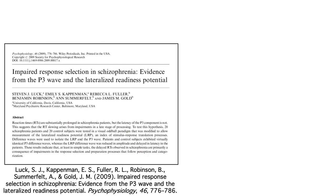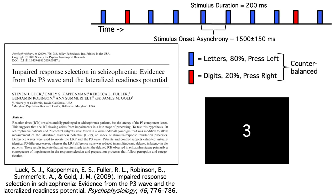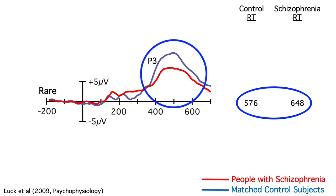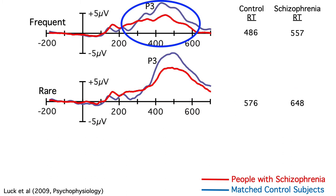With that in mind, our study examined the rare-frequent difference wave in people with schizophrenia and matched control subjects. We presented letters and digits in the center of a computer monitor with one stimulus every 1500 plus or minus 150 milliseconds. The task was to press one button for letters and another button for digits. One of these categories was rare and the other was frequent, but everything was counterbalanced. The amplitude for the oddballs during the P3 latency range was smaller in people with schizophrenia than in control subjects. Response times were delayed by about 70 milliseconds in the schizophrenia group, but there was no obvious difference in P3 latency. There was also a difference in amplitude during the P3 latency range for the frequent category, and a 70 millisecond slowing of RTs in the schizophrenia group. The reduced amplitude in the schizophrenia group was present for the frequent category as well as for the rare category — it wasn't just for the oddballs.